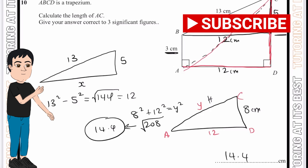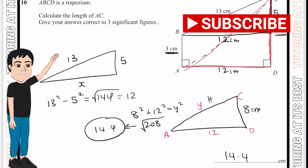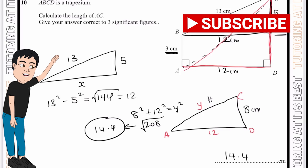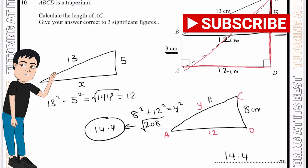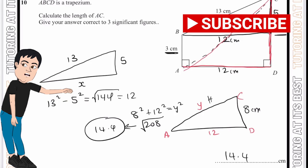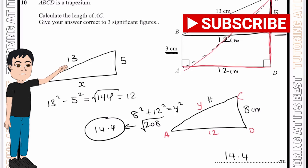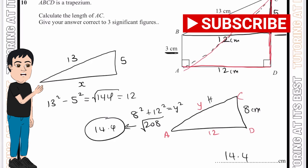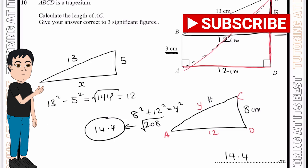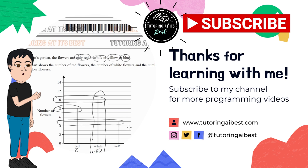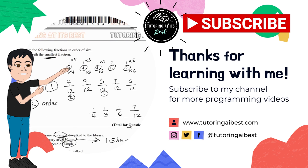You've done amazingly well. We've gone through the laws of Pythagoras' theorem and understood how to answer specific questions — not only with triangles but also with trapeziums, isosceles triangles, and quadrilaterals. Remember it can be used to calculate the length of any side in a right-angled triangle. Keep up the momentum and I'll see you in the next video. Thank you.